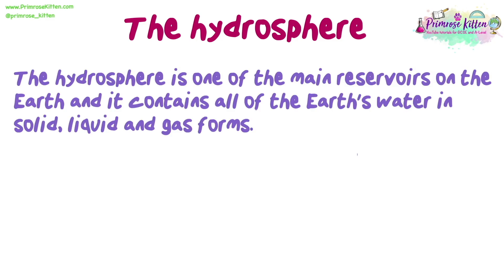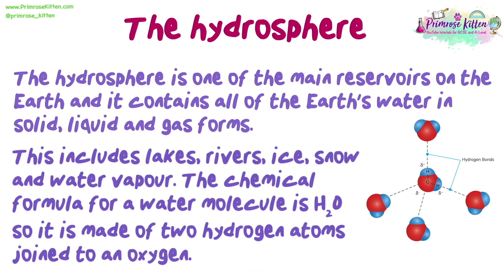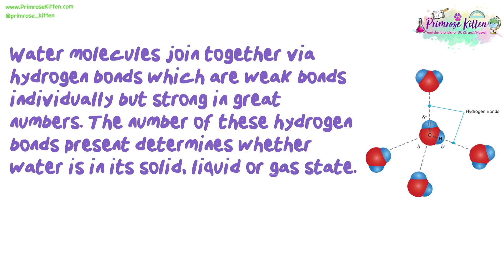The hydrosphere is one of the main reservoirs on the earth and it contains all of the earth's water in solid, liquid and gas forms. This includes lakes, rivers, ice, snow and water vapour. The chemical formula for a water molecule is H₂O, so it is made up of two hydrogen atoms joined to an oxygen. Water molecules join together via hydrogen bonds, which are weak bonds individually but strong in great numbers. The number of these hydrogen bonds present determines whether water is in a solid, liquid or gas state.